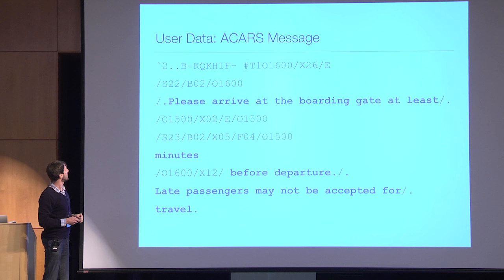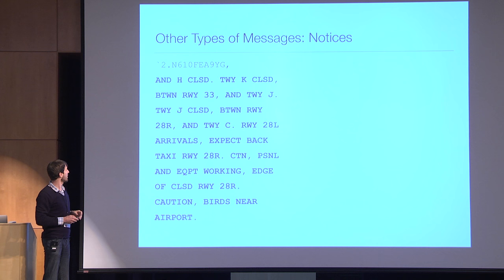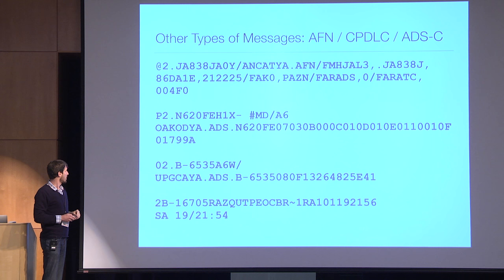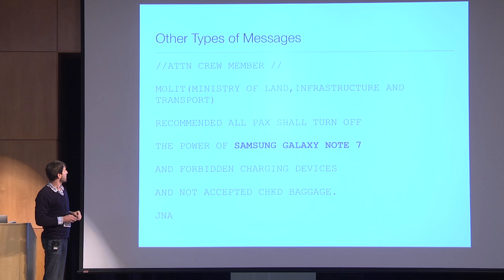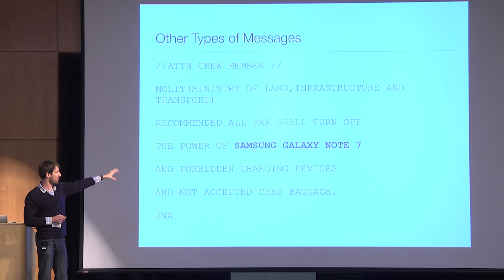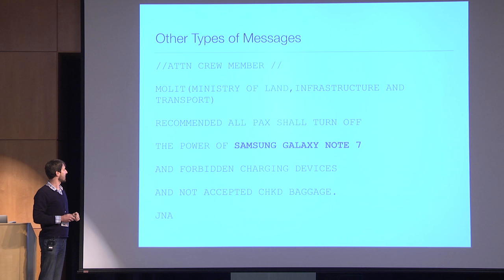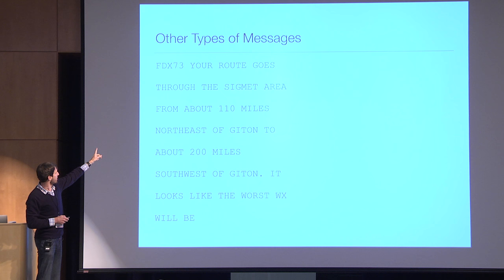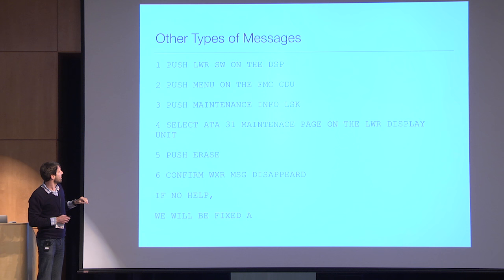You get all sorts of interesting messages: arriving at the gate early, notices about certain runways, weather information, encodings of aviation tracking systems like FANS and various ADS systems with their fancy encodings, other flights that are on time. There are commercially preferred alternate routes, instructions to a FedEx flight about bad weather, and specific instructions with lots of fancy acronyms on how to do something with one of the flight management computers.